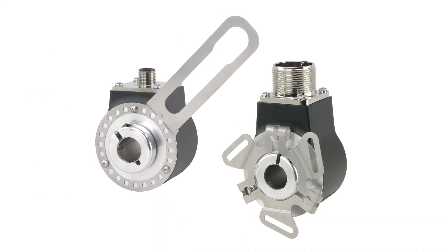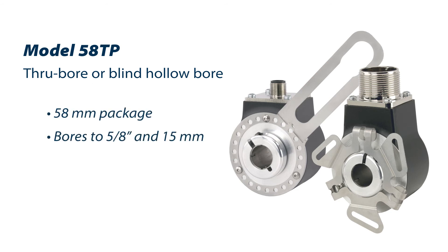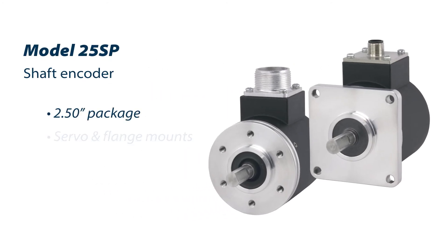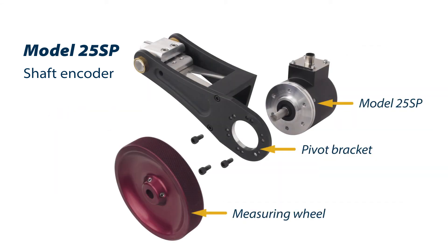This is our model 58T — a 58 millimeter through bore or hollow bore encoder that comes with a variety of bore sizes and a variety of one-point and three-point mounts. It's very common to put on the back of induction motors if you have a motor with a gearbox. This is our model 25SP — a two-and-a-half inch shaft encoder that comes in a variety of flange types and shaft diameters. It's commonly put on the back of a motor with a coupling, and it's also the encoder you see here on the mount with the wheel, so you'd order the 25SP with the bracket and wheel to get the PLMS solution.